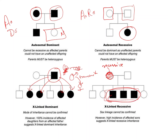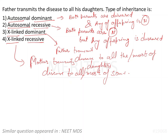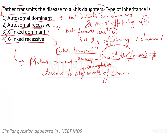When most of the sons are involved and the mother seems to be a carrier, that is called X-linked recessive. Father transmits disease to all or most daughters — that is X-linked dominant. Mother transmits disease to most sons — that is X-linked recessive, where most male offspring are diseased.